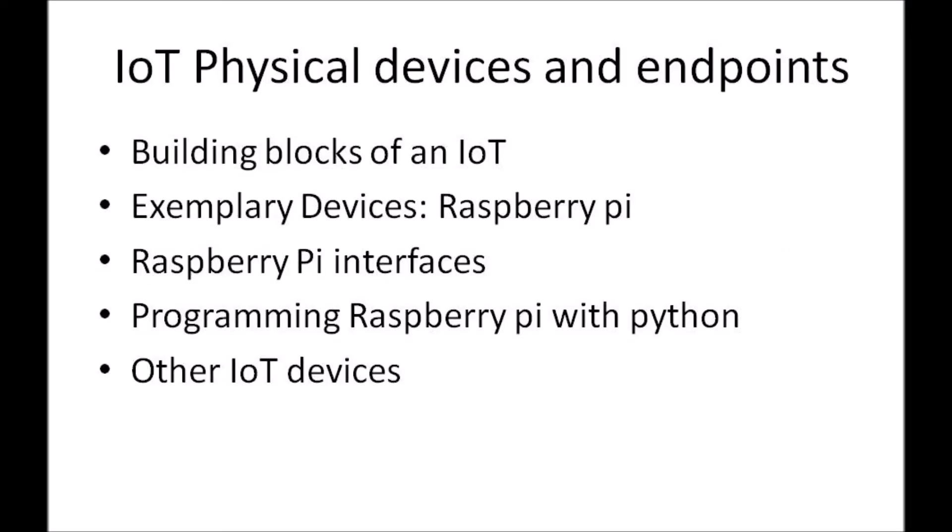This explains the first topic — IoT Physical Devices and Endpoints. This slide tries to explain what physical devices contribute as the 'things' in IoT. Basically, the main component is the microcontroller. There are many types, but in this unit we take Raspberry Pi as an example. We will study Raspberry Pi interfaces and how to program using Python. It is not necessary to restrict to Raspberry Pi — other IoT devices like Arduino, ESP8266, and BeagleBoard can also be considered.